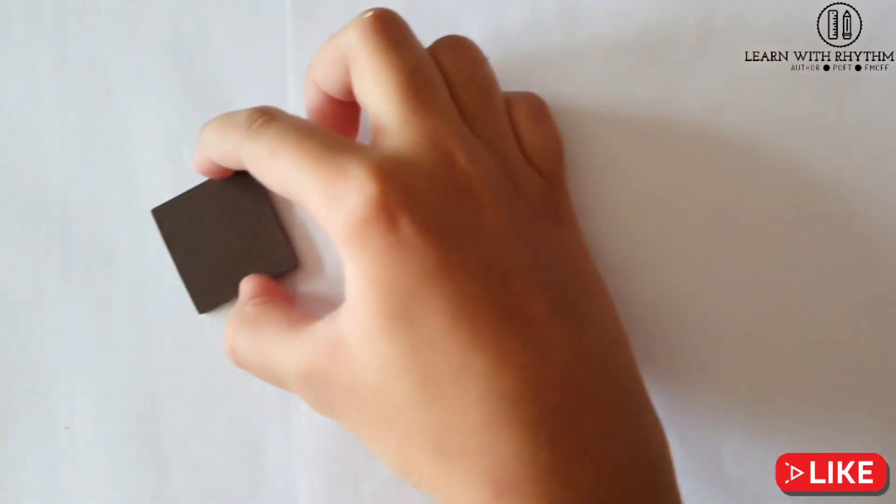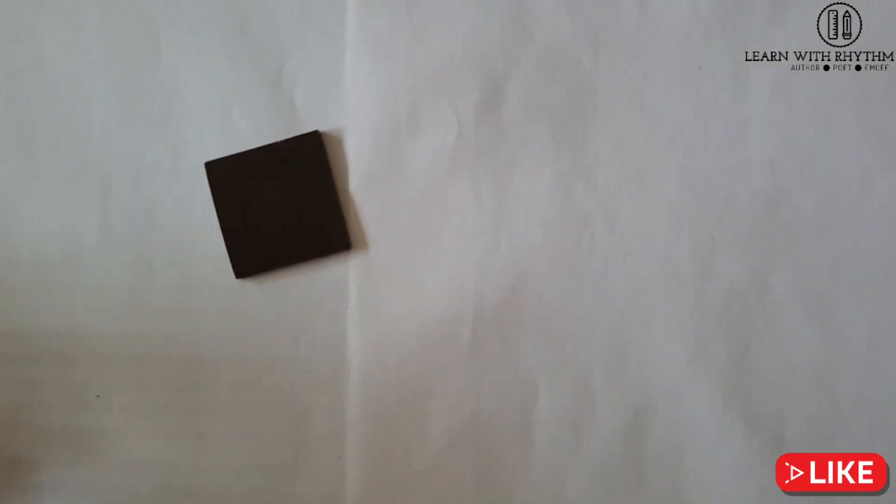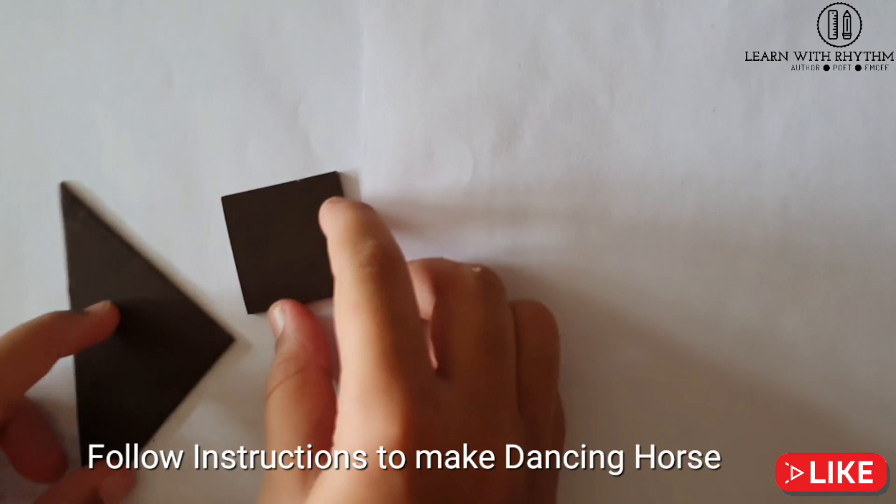That's a dancing horse. Let's get started. First we need our square and put it in a diamond formation here to form our dancing horse's tail. Then we take one of the big triangles and put it here.